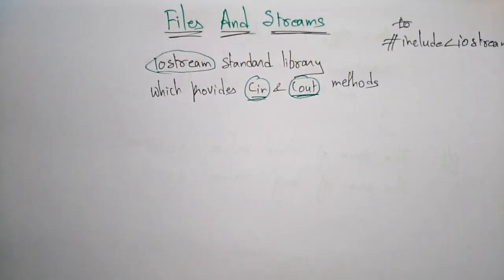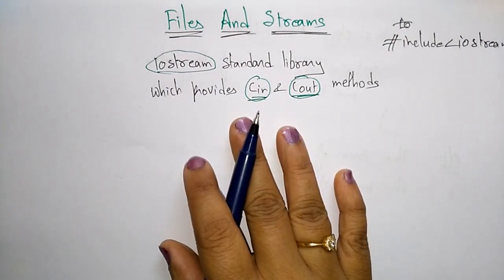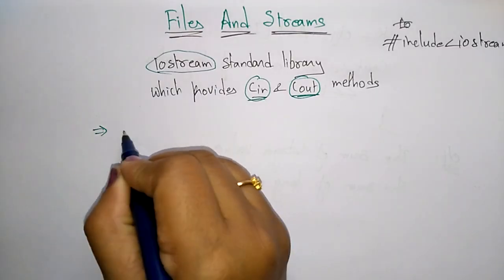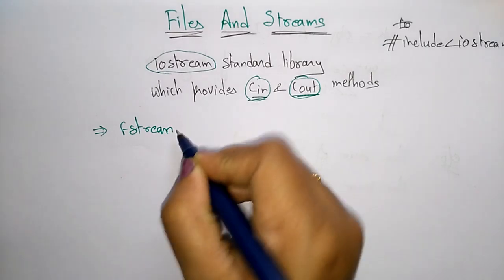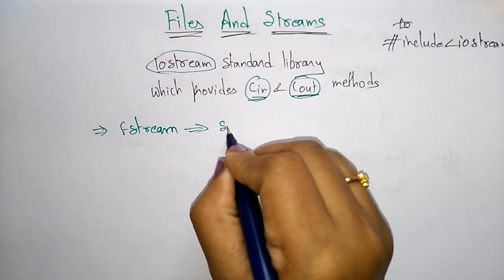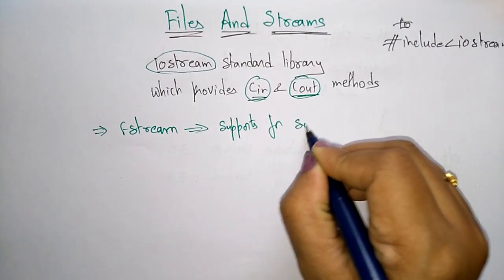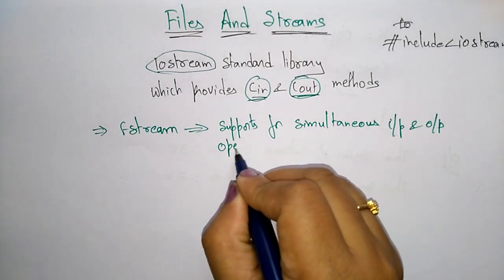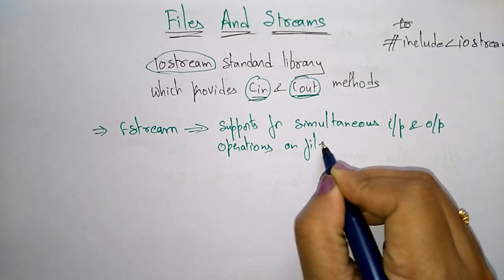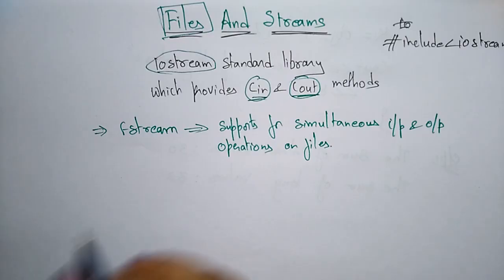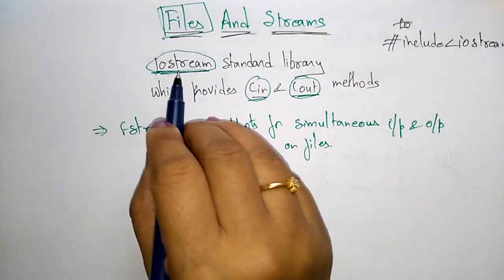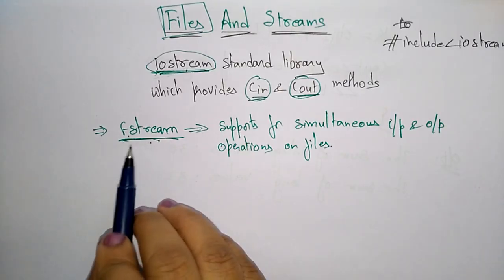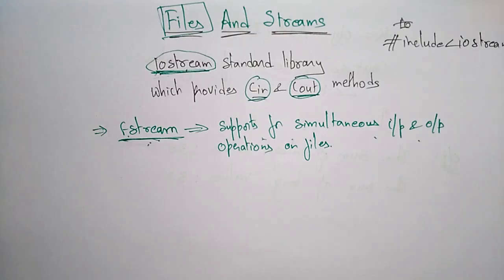When coming to files and streams, to read and write from a file we need another standard C++ library which we call fstream. This fstream supports simultaneous input and output operations on files. Whenever you are using the file system, instead of using the iostream standard library function, you will go for fstream — fstream is nothing but the file stream.